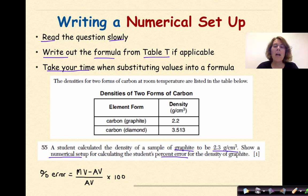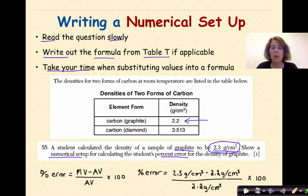Percent error is equal to the measured value minus the accepted value divided by the accepted value times 100. So we're going to write that out first. Now the measured value is the 2.3 grams per centimeter cubed. The accepted value for graphite is right here. What is listed in the table. So when you write this out, you should see something like this. The measured value by the student minus the accepted value divided by the accepted value times 100. And that's it. You do not need to write an answer if you don't want to. What we're testing here is the numerical setup.